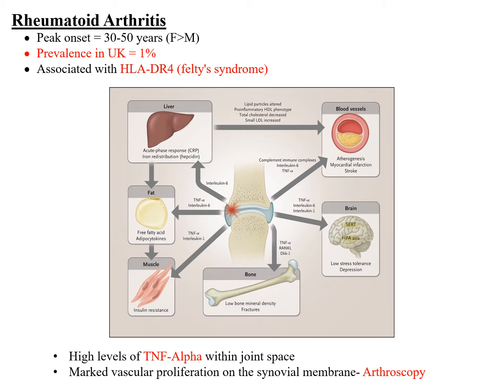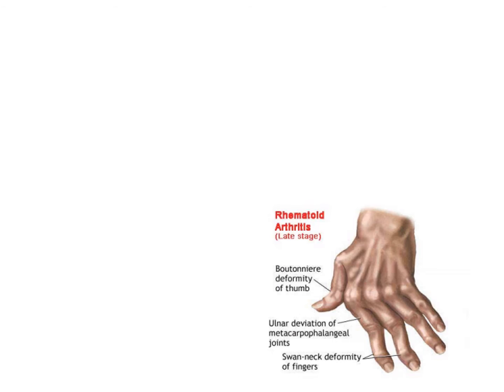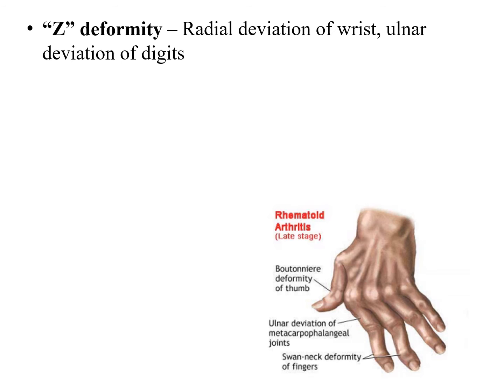On arthroscopy of a rheumatoid arthritis affected joint, you will find marked vascular proliferation on the synovial membrane. The characteristic feature of rheumatoid arthritis is involvement of the small joints of the hands. If a patient is not treated well, a characteristic deformity of the hands occurs, called Z-deformity, which includes radial deviation of the wrist along with ulnar deviation of the digits.